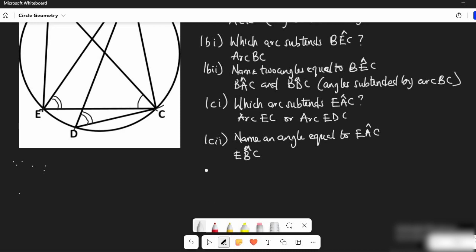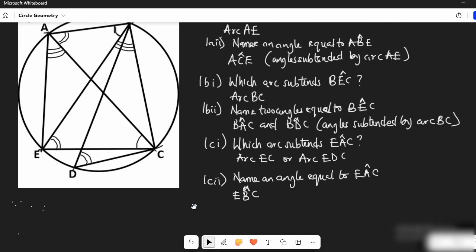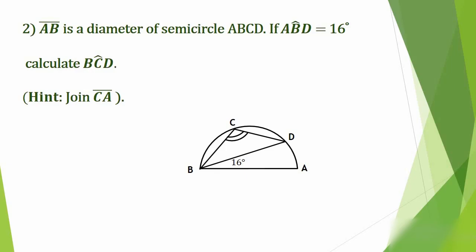Now let's move to question 2. Line AB is the diameter of semicircle ABCD. If angle ABD equals 16 degrees, calculate angle BCD. They give us a hint to join line CA — that is, to join point C and point A with a line. Let's move to our whiteboard to solve this.